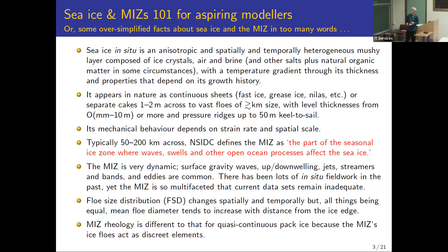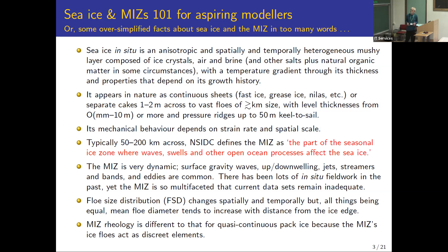There are separate floes starting around pancake ice, one or two meters across, going up to vast floes of several kilometers or more if we look back at how the Arctic used to look. We've got pressure ridges on top of that — the biggest ever measured was 50 meters keel to sail. The marginal ice zone is typically 50 to a couple hundred kilometers across, defined by the NSIDC as the part of the seasonal ice zone where waves, swell, and other ocean processes affect the sea ice.